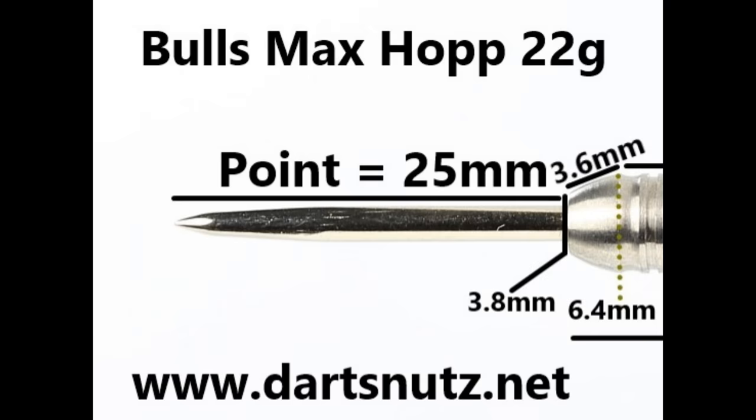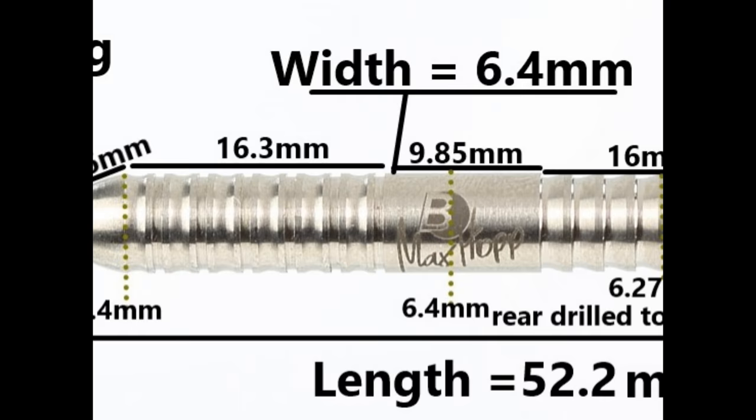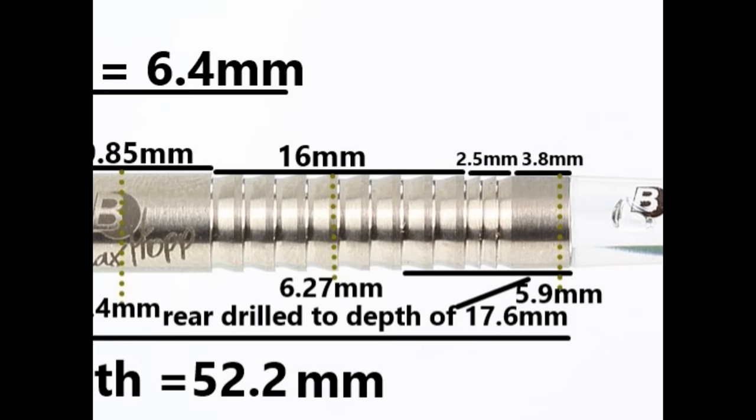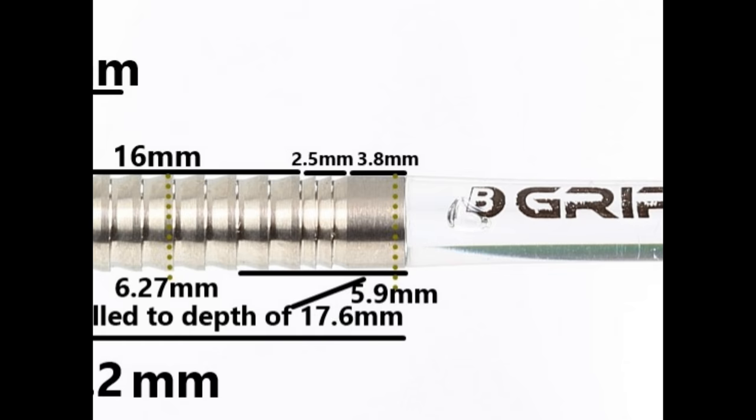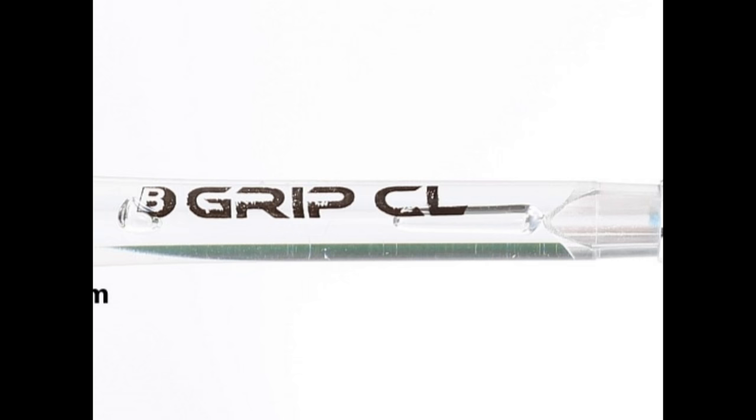Let's have a little close look at the barrels. It's fitted with a silver 25 millimeter point with a small tip bullnose of 3.6 millimeters. Then you've got this kind of double ring grip with a scallop in the middle that's 16.3 millimeters wide, then a smooth section of 9.85 millimeters, then a razor style grip on the rear of 16 millimeters, then a mini razor style grip of 2.5 millimeters, and then a smooth section of 3.8 millimeters. The length is 50.2 millimeters and the width is 6.4 millimeters.